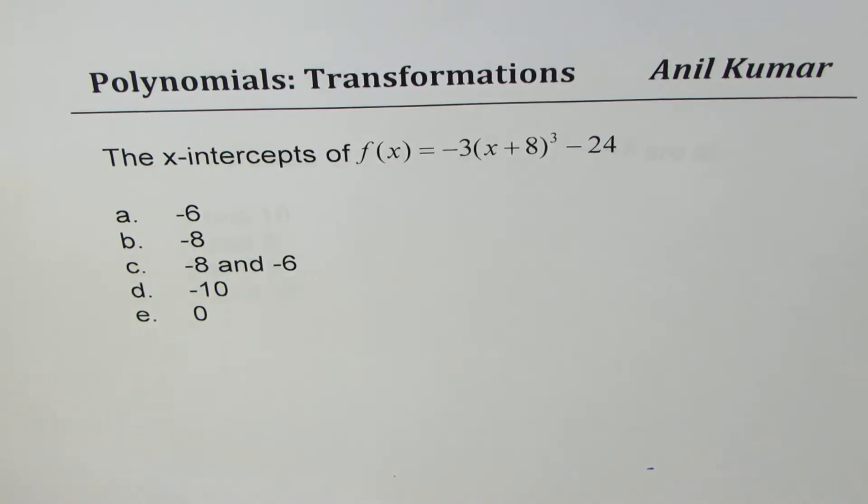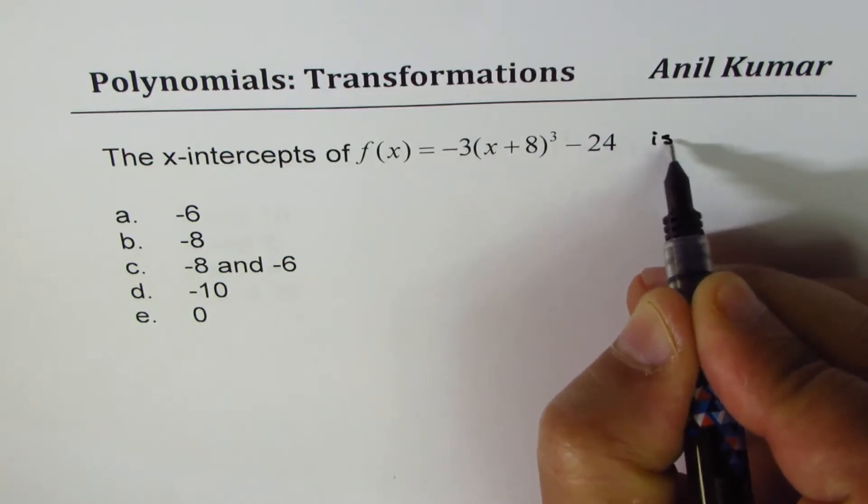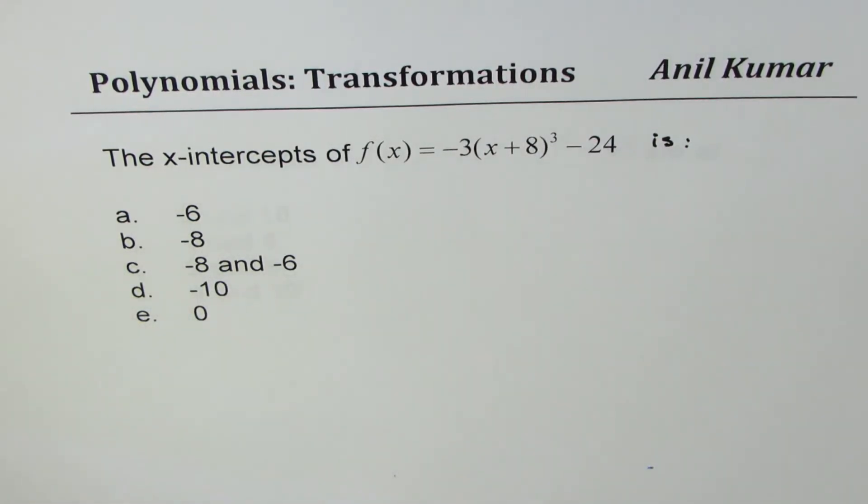The question here is: the x-intercepts of f(x) equal to minus 3 times (x + 8)³ minus 24 is what? We'll figure it out. You can always pause the video, answer the question, and then look into my suggestions.